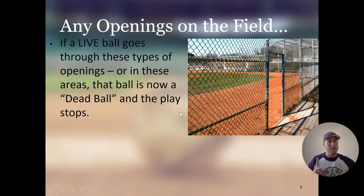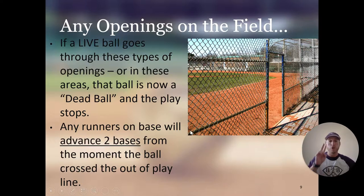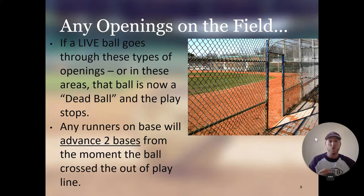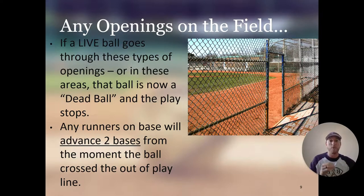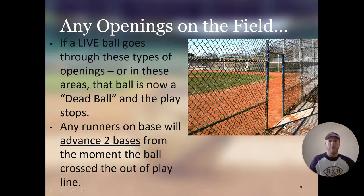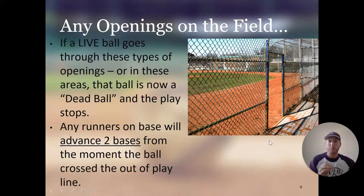Any runners on base will advance two bases from the moment the ball crossed the out-of-play line. So if there's a runner on first base and the ball crosses the line and goes out of play, that runner now goes to third base — they advance two bases anytime the ball goes out of play. It's very important to make good throws and not let the ball go out of play, because runners advance two bases from the moment the ball crosses the line. So if the runner's foot hits second base before the ball crosses out of play, that player scores — going from second to home. Always keep track of the ball and don't let it go out of play.